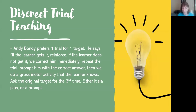Discrete trial teaching is what we do as ABA therapy. Andy Bondy prefers one trial for one target, which is what we've been doing in the school for the last five or six years. If the learner gets it, you reinforce. If the learner does not get it, we correct immediately, repeat the trial, and prompt with the correct answer. Then we do a gross motor activity the learner knows and ask the original target for the third time — it's either a plus or a prompt.